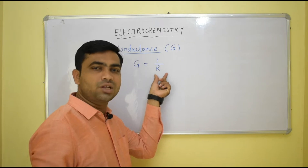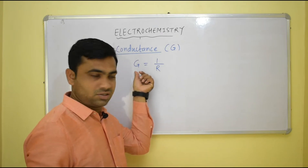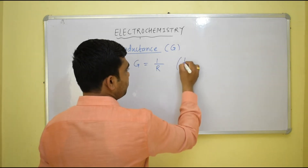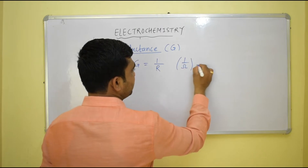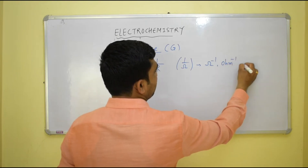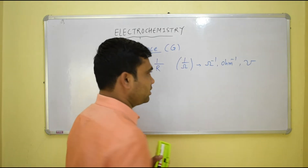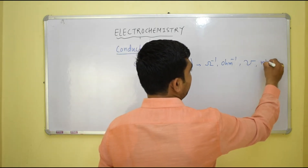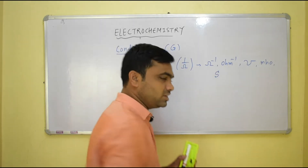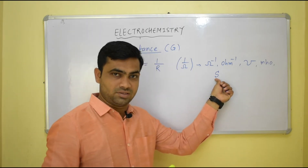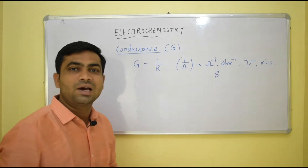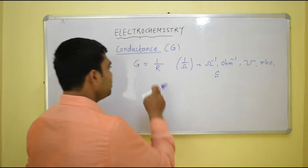Since resistance R has the unit of ohm, conductance will have the unit of one upon ohm, which can be written as ohm inverse. It can also be written as the inverted omega symbol, or as 'mho', or in terms of the scientist's name, as 'siemens'. All these are units of conductance.